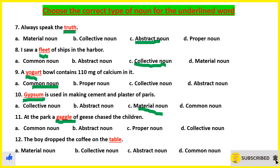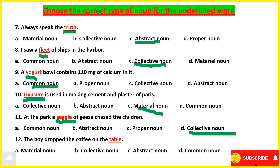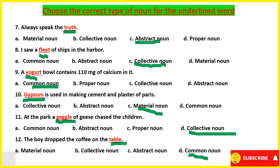Coming to the eleventh one: 'At the park, a gaggle of geese chased the children.' Gaggle — I am again referring to the group of geese, so the answer will be collective noun. Coming to the twelfth one: 'The boy dropped the coffee on the table.' Table will be common noun.